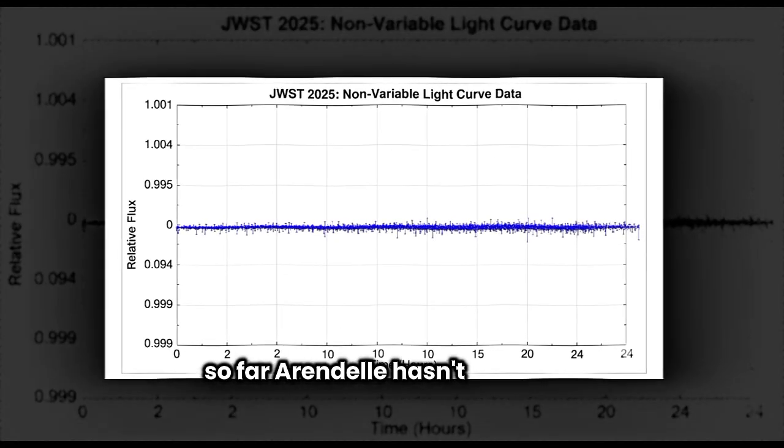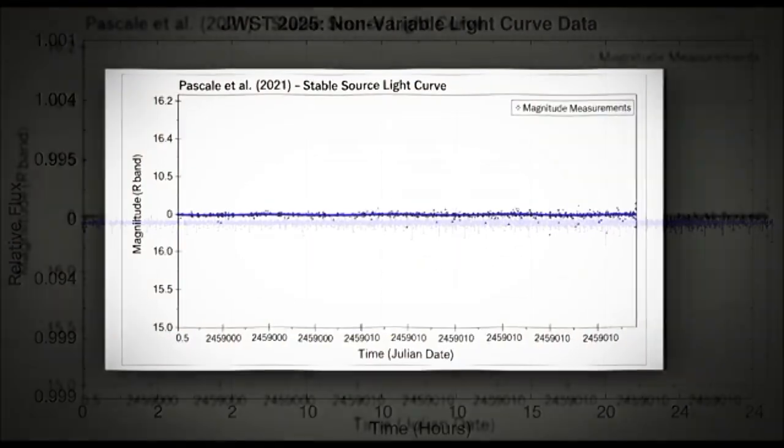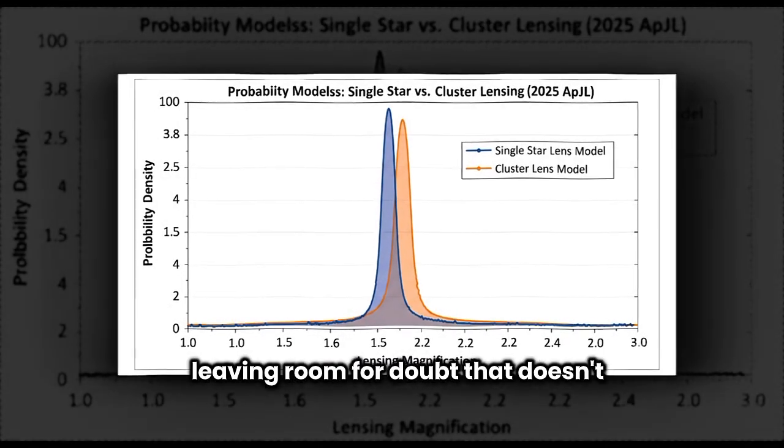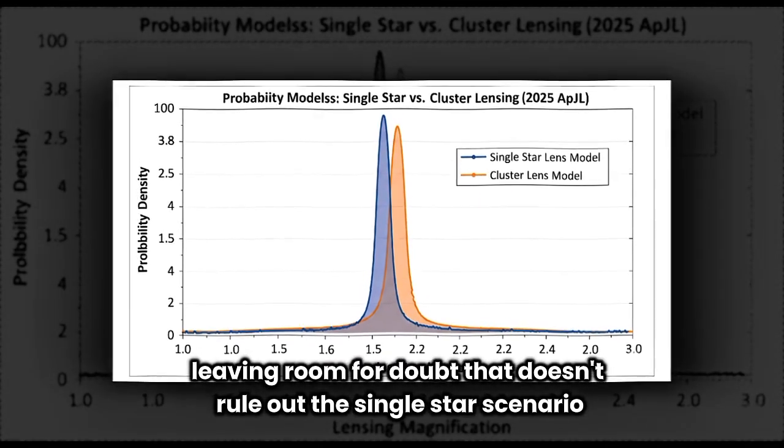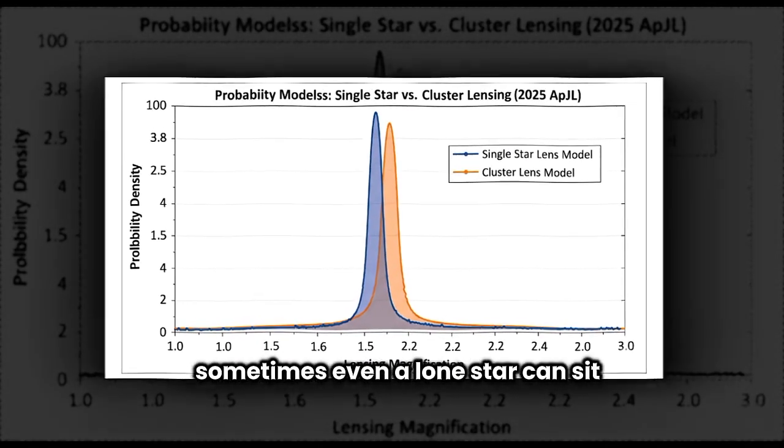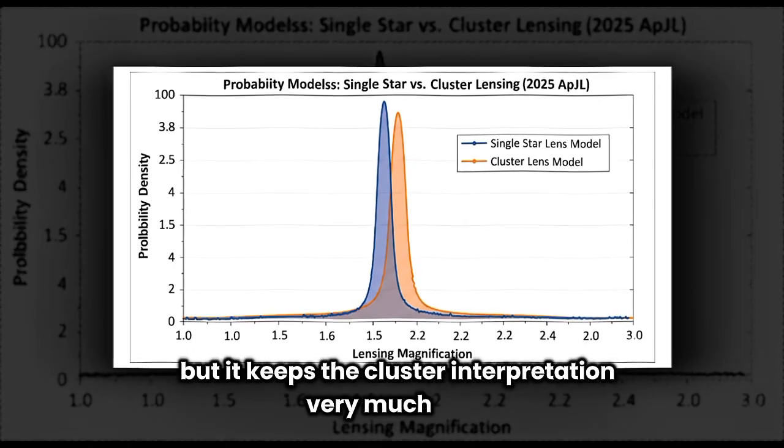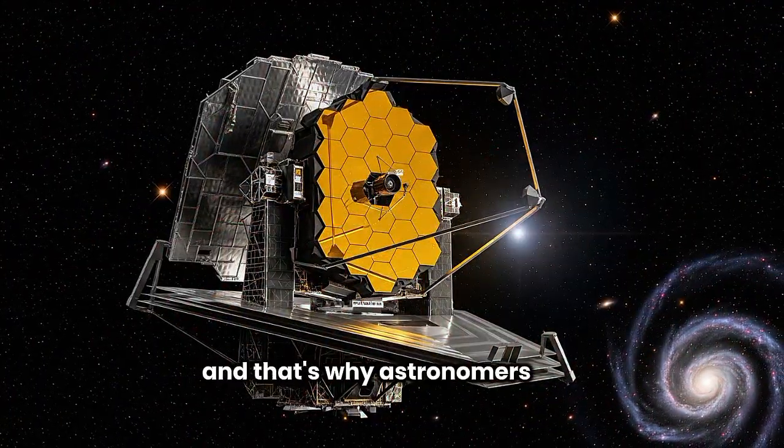So far, Earendel hasn't shown the expected flickers. Its brightness has held steady, leaving room for doubt. That doesn't rule out the single star scenario. Sometimes even a lone star can sit quietly on the lensing field, but it keeps the cluster interpretation very much alive. And that's why astronomers keep watching.